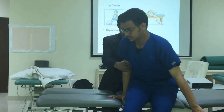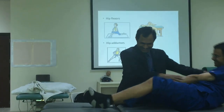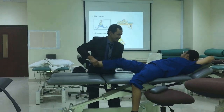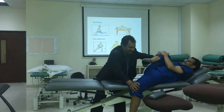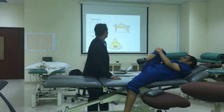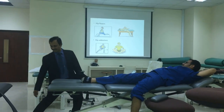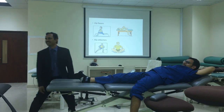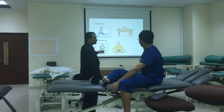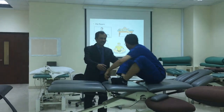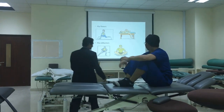Hip flexors stretch - doing like this, keep the hip flexors stretched. Then adductors stretch - doing like this for the right side adductors. Or another way: keep adductors like this, and stretch. These are the stretching exercises - you should demonstrate any of them.